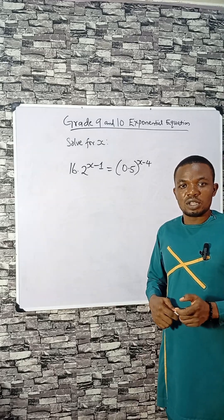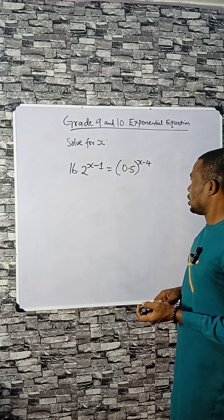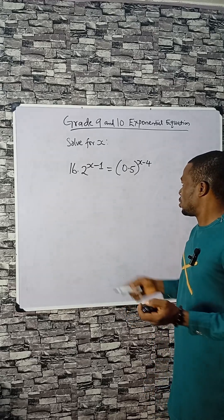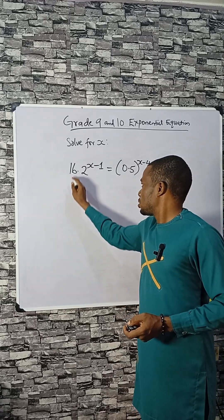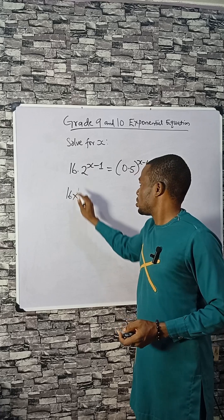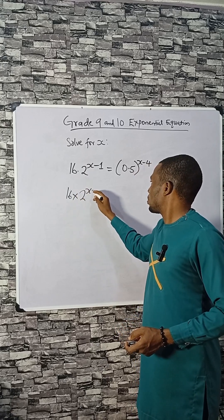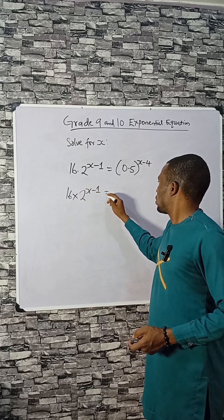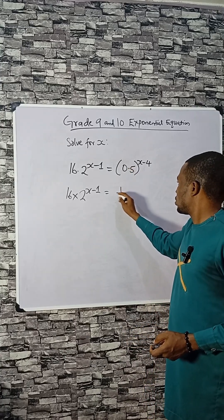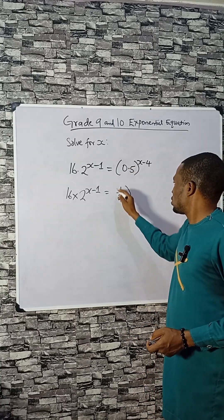This is a nice exponential equation for Grade 9 and 10. Let's find the value of x. We have 16 times 2 raised to the power of x minus 1. We can convert 0.5, which is a half, expressed as a base-2 power.